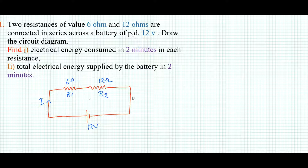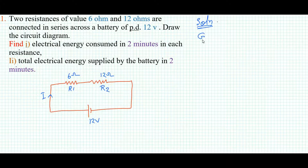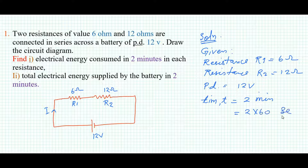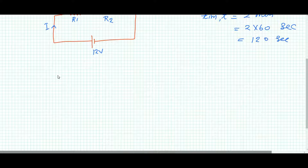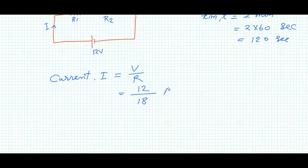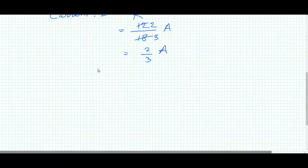Here is the circuit diagram. Now I will write the solution with the given data. The total resistance is R1 plus R2 equal to 6 plus 12 equal to 18 ohms. Therefore, current I equals V by R total, which is equal to 12 by 18 ampere, that is equal to 2 by 3 ampere.